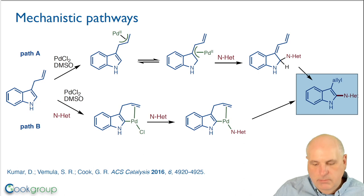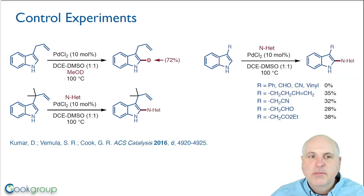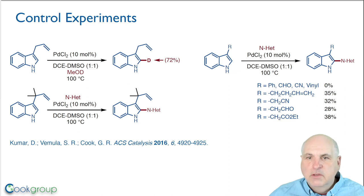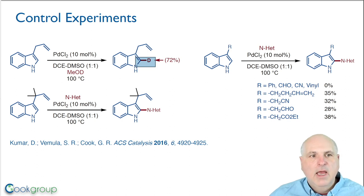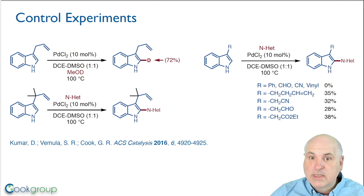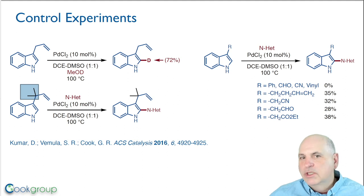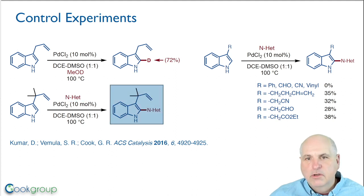To investigate these pathways we carried out control experiments. To determine where exactly the palladium catalyst was acting on allyl indole, we exposed allyl indole with the palladium catalyst in the presence of deuterated methanol and in the absence of any nitrogen nucleophile. We observed 72% deuterium incorporation at the C2 position of the indole and absolutely zero deuterium at the allylic position, suggesting no π-allylpalladium complex is being formed but that the C2 position is active. We also looked at the substrate where the allylic position was blocked by gem-dimethyl groups, which cannot undergo oxidation to form a π-allylpalladium complex — we still observed formation, albeit in low yield, of the C2-N functionalized product.